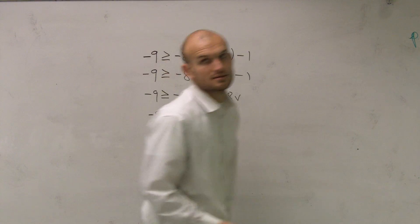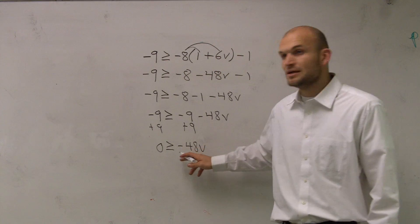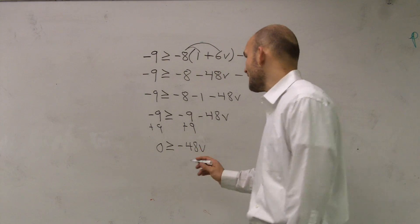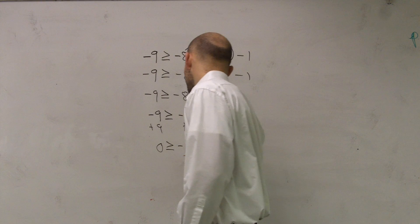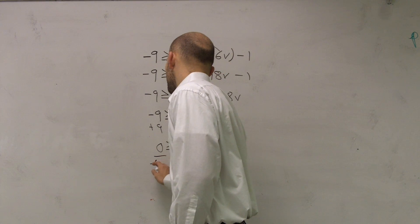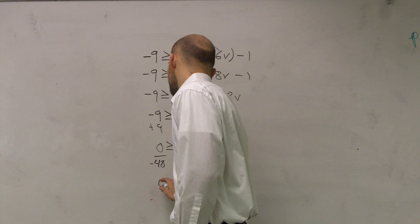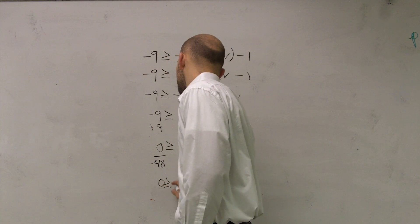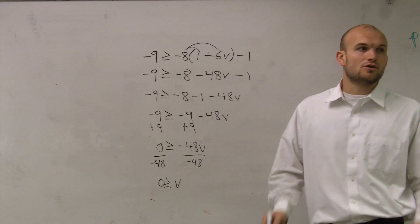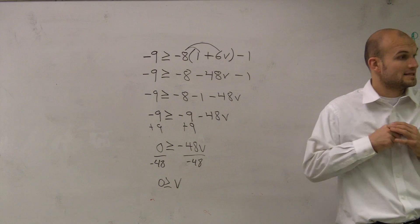That's actually pretty helpful because now, to get rid of the negative 48, I divide by negative 48. Therefore, I have 0 is greater than or equal to v.